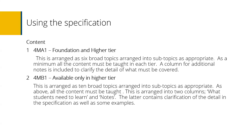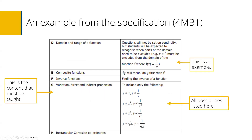Looking at an example from the specification document: the left-hand column deals with the actual content that must be taught, and the right-hand side has clarifications and examples of possible content. It doesn't include all examples, so you'll need to access other materials too. You can gauge from there what you need to teach and what students will be assessed on — both examiners and teachers refer to this document.